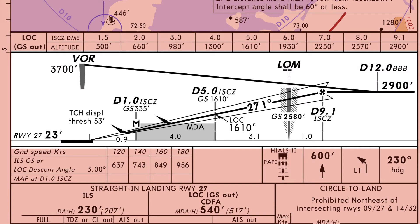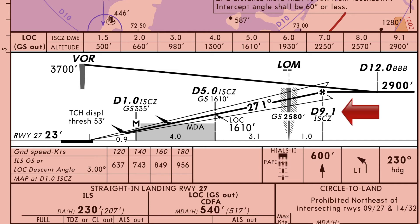The next part of the approach plate is the profile view. Both the plan and the profile view are to be read together to give a complete understanding of the procedure. The aircraft will approach the initial approach fix — the VOR — at 3,700 feet. It will leave the VOR on a track of 078 for 12 miles and descend to 2,900 feet. The aircraft will perform the base turn and intercept the localizer course of 271. At 9.1 ILS DME it will begin to intercept the glide path for the final approach segment, continuing to the missed approach point at 1 ILS DME. If the runway is not in sight, it will then perform a missed approach.